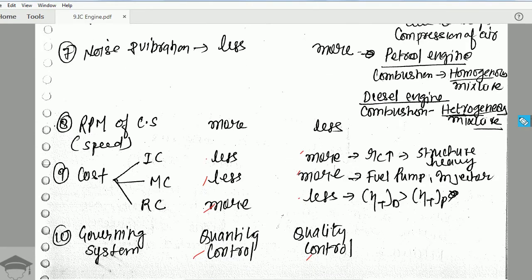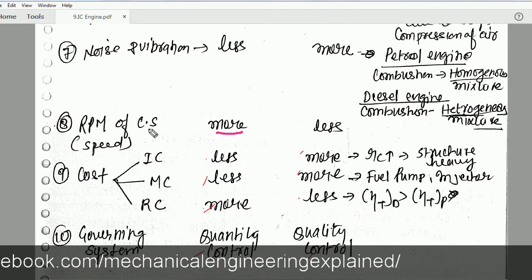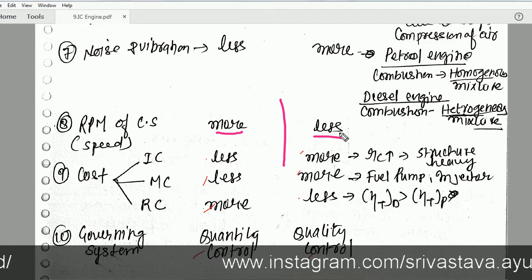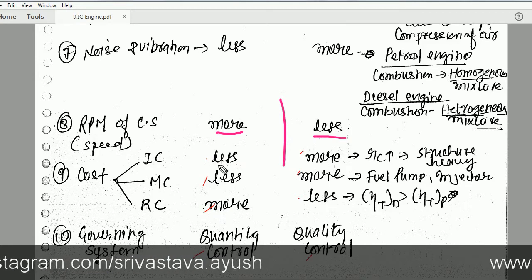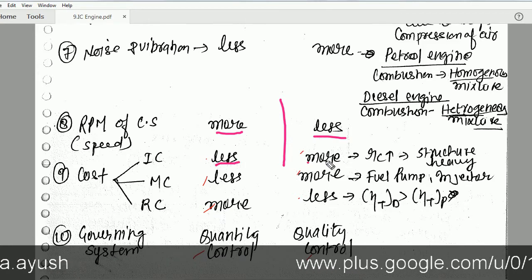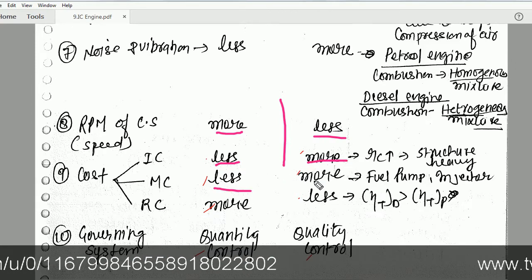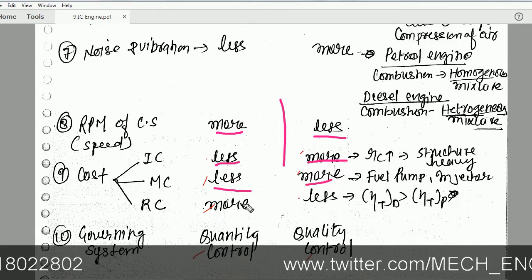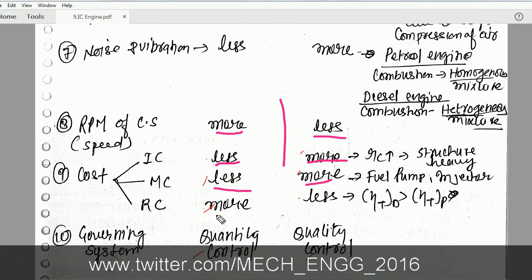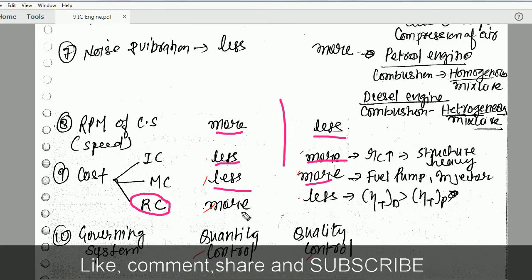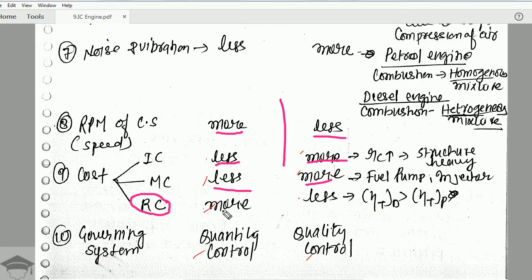The engine speed (RPM) is more in a petrol engine and less in a diesel engine. The initial cost is less for a petrol engine and more for a diesel engine. Maintenance cost is also less for a petrol engine and more for a diesel engine. However, the running cost — the amount of fuel consumed — is more for a petrol engine since petrol is costlier, and less for a diesel engine.